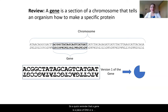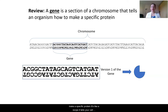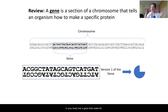A quick reminder that a gene is a piece of DNA, or a section of a chromosome, that tells an organism how to make a specific protein. It's like a recipe — it tells your cell how to make a protein. And each and every single protein in your body has a gene that codes for it.